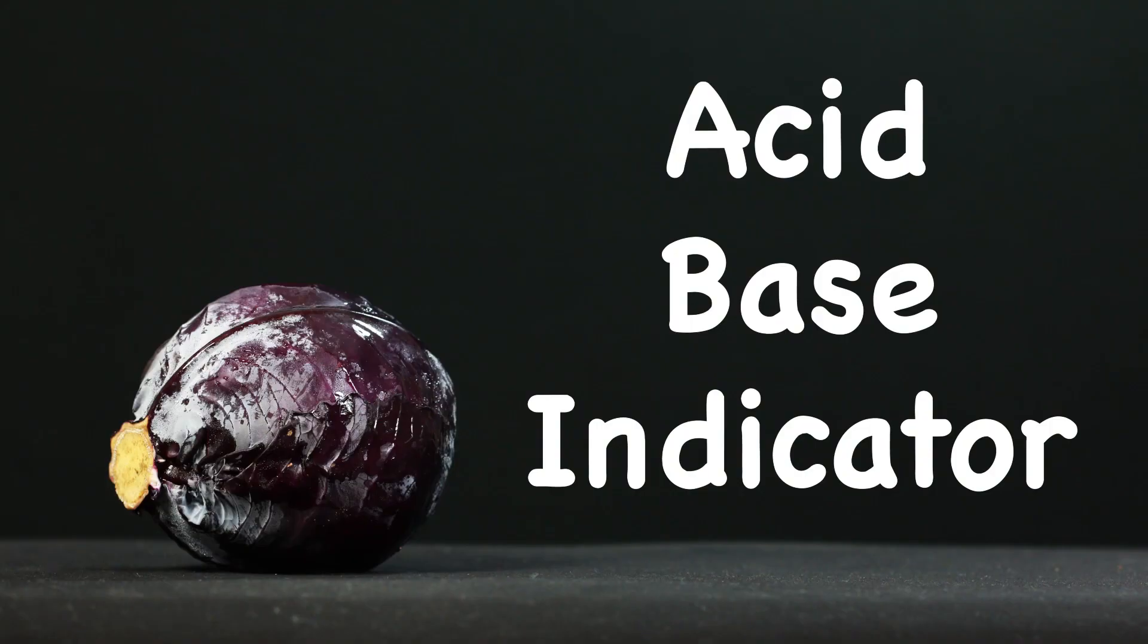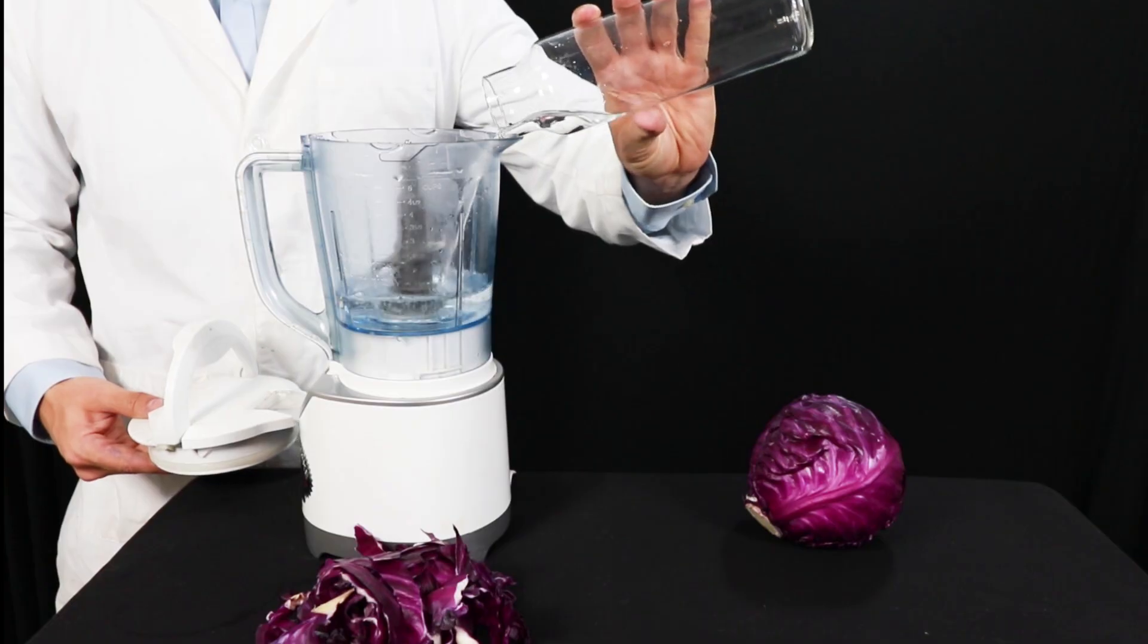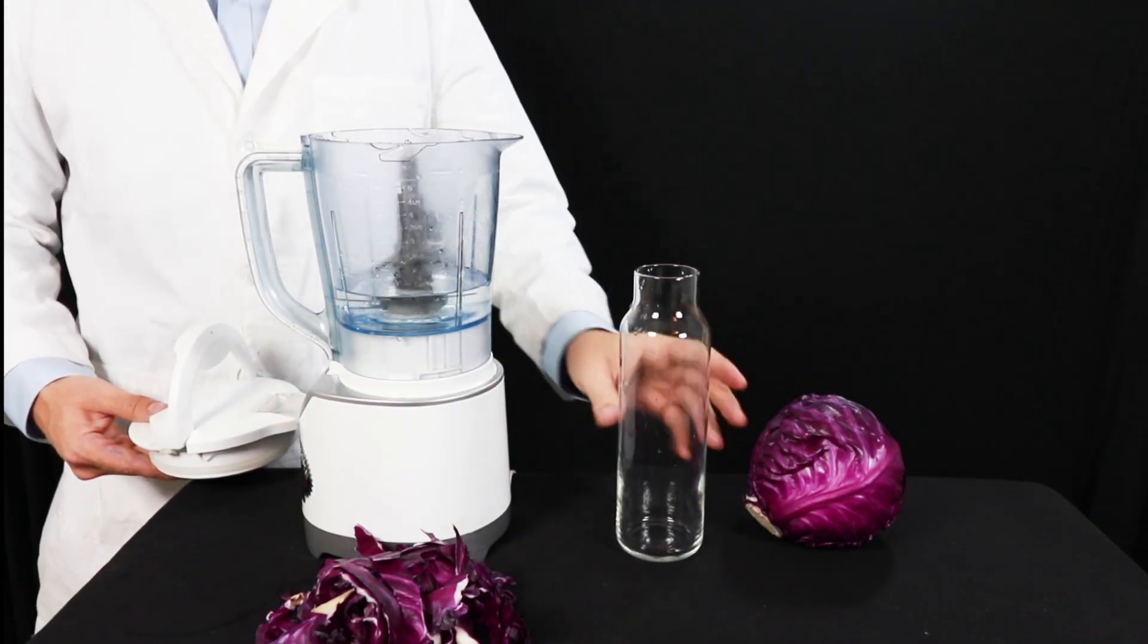Bearded Science Guy here, and today we're going to use red cabbage as an acid-base indicator. To start with, pour about one to two cups of water into a blender. Warm water works the best, but any temperature will do.